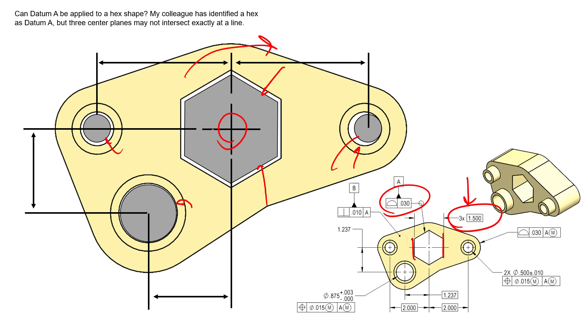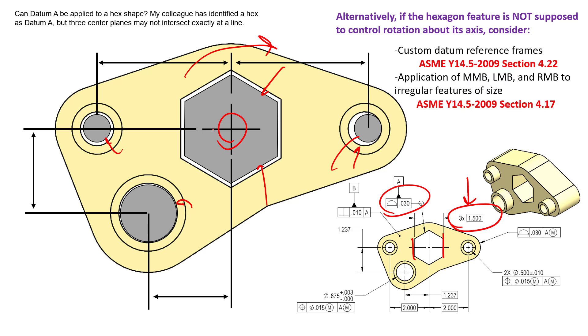Alternatively, if the hexagon feature is not necessarily supposed to control the rotation about its axis, we can consider a couple of other different ways to control this feature as a primary datum. One of them being custom datum reference frames from the ASME Y14.5-2009 Section 4.22. Another one we can consider is the application of MMB, LMB, and RMB to irregular features of size. Check out Section 4.17. We cover both of these topics in our advanced course if you're interested to learn more.